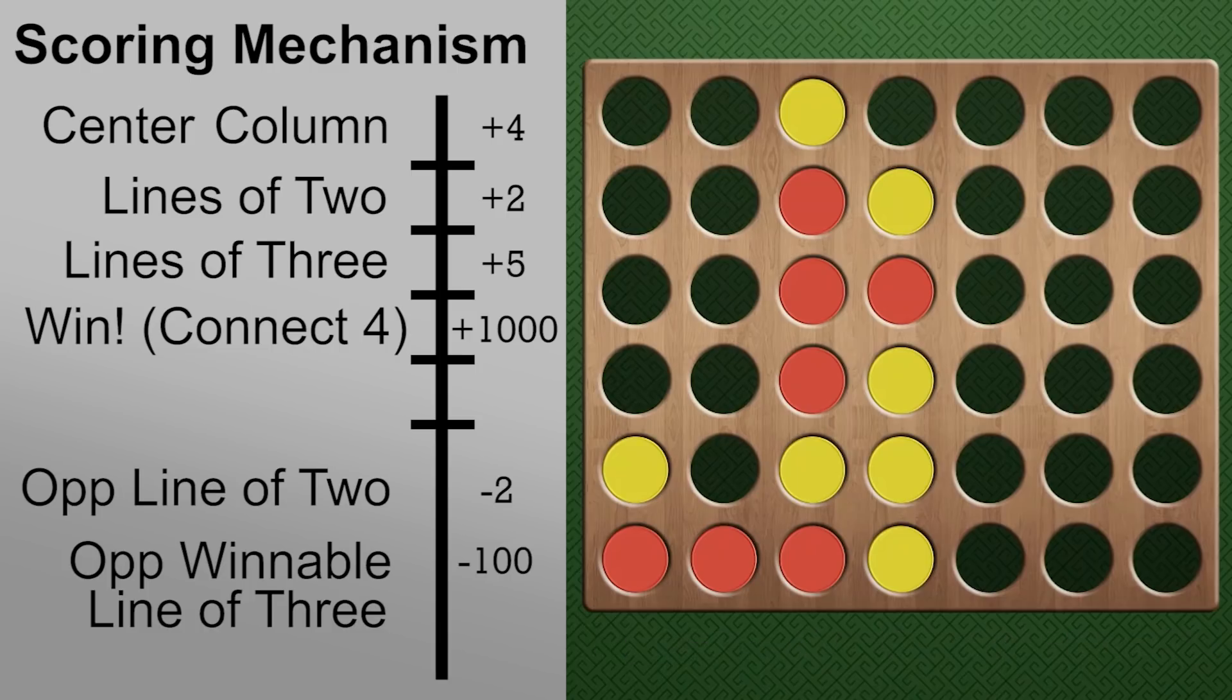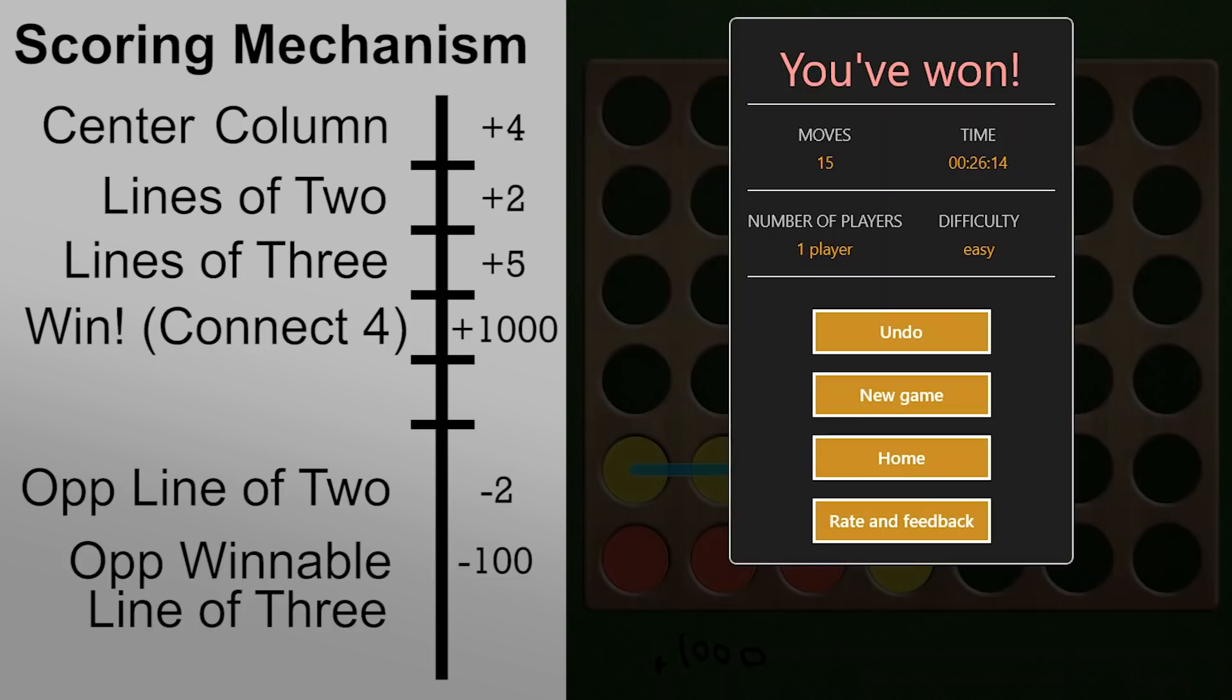So with that last move, the opponent made a mistake, and our AI will capitalize on that and drop it to complete the four in a row with the plus 1,000 score. And we win. Woo!